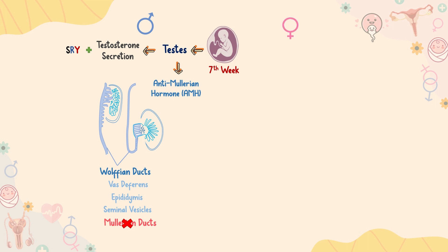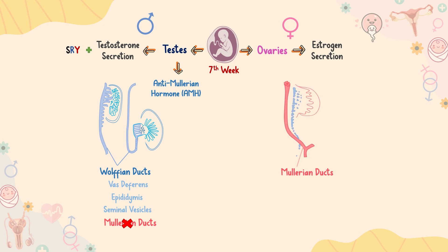On the flip side, the opposite happens in females. The ovaries secrete estrogen, but not anti-Mullerian hormone or testosterone. In the absence of the SRY gene, testosterone, and anti-Mullerian hormone, the Mullerian ducts will develop to form female accessory sex organs, including fallopian tubes, uterus, cervix, and the upper one-third of the vagina, while the Wolffian ducts degenerate.